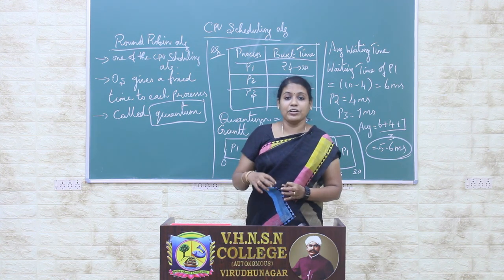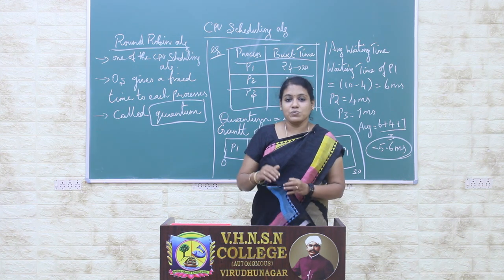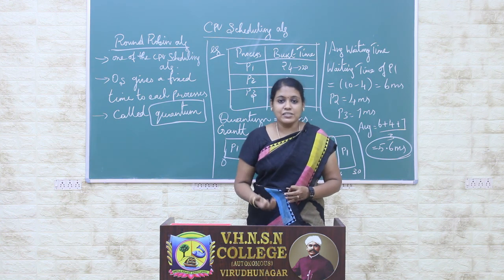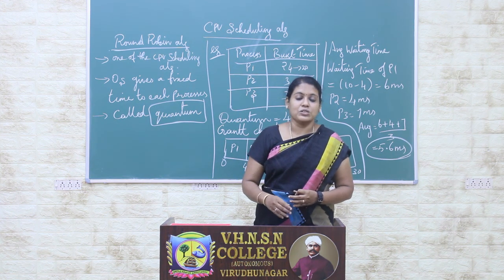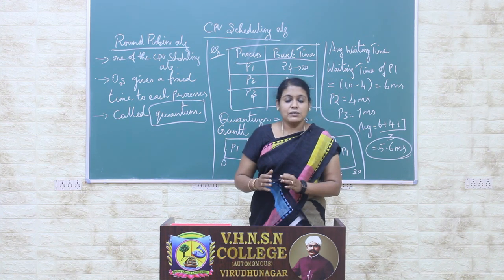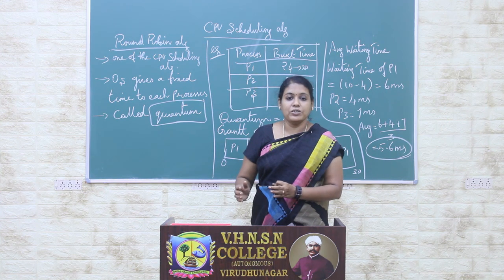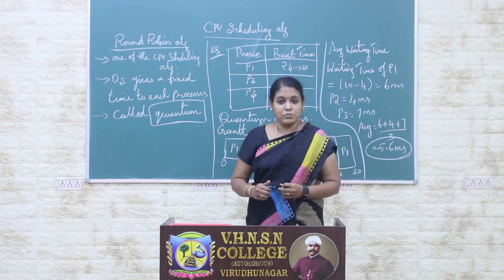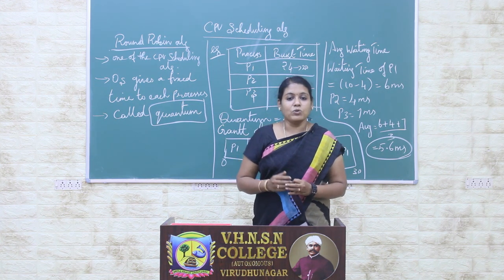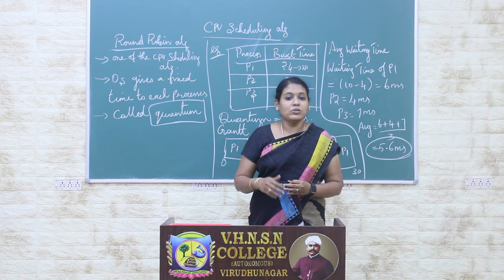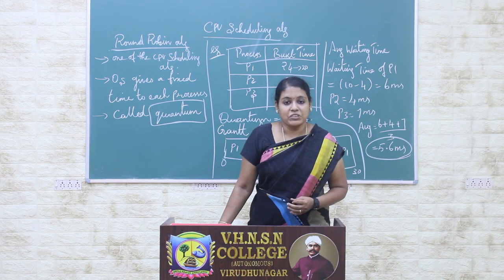After the quantum period, the next process in the ready queue preempts the CPU and executes its process for a given quantum period. Then the next process in the CPU is preempted, and the following process starts its execution for a given quantum period. Similarly, all processes in the ready queue take turns occupying the CPU to finish their work, each for one quantum period.